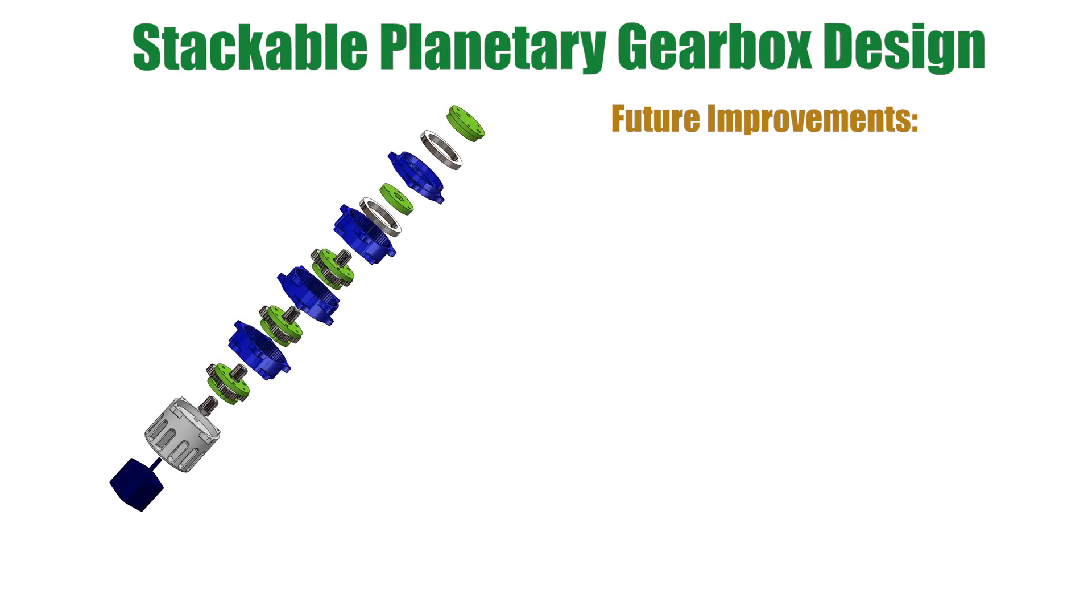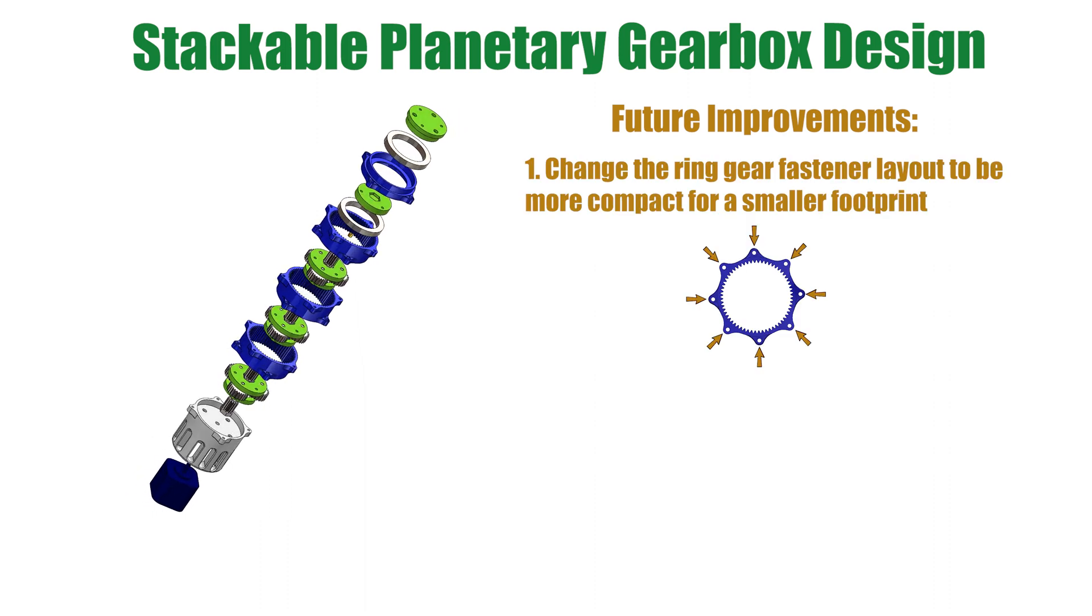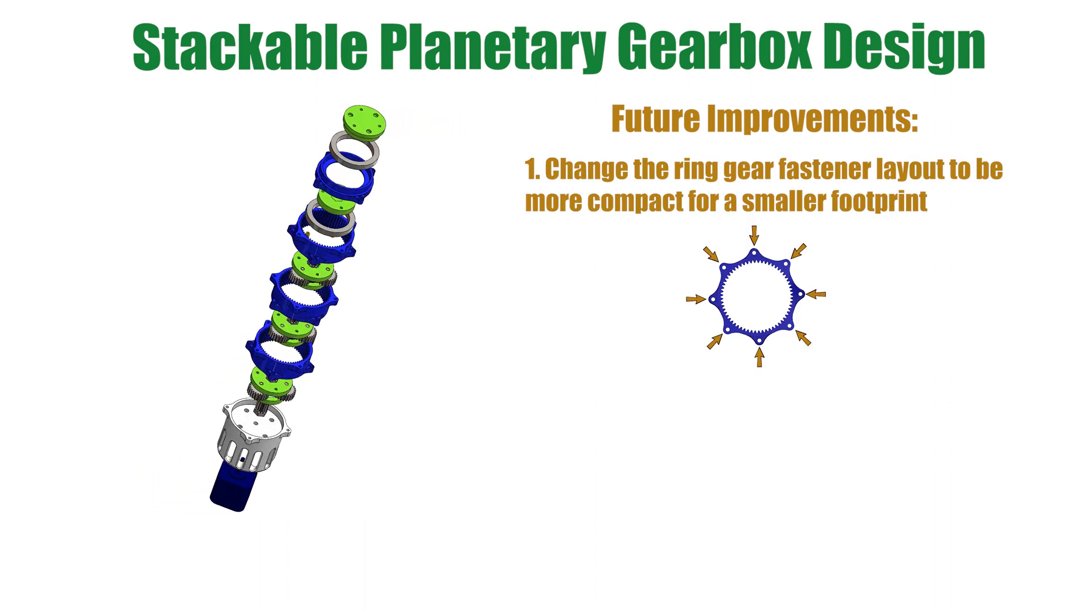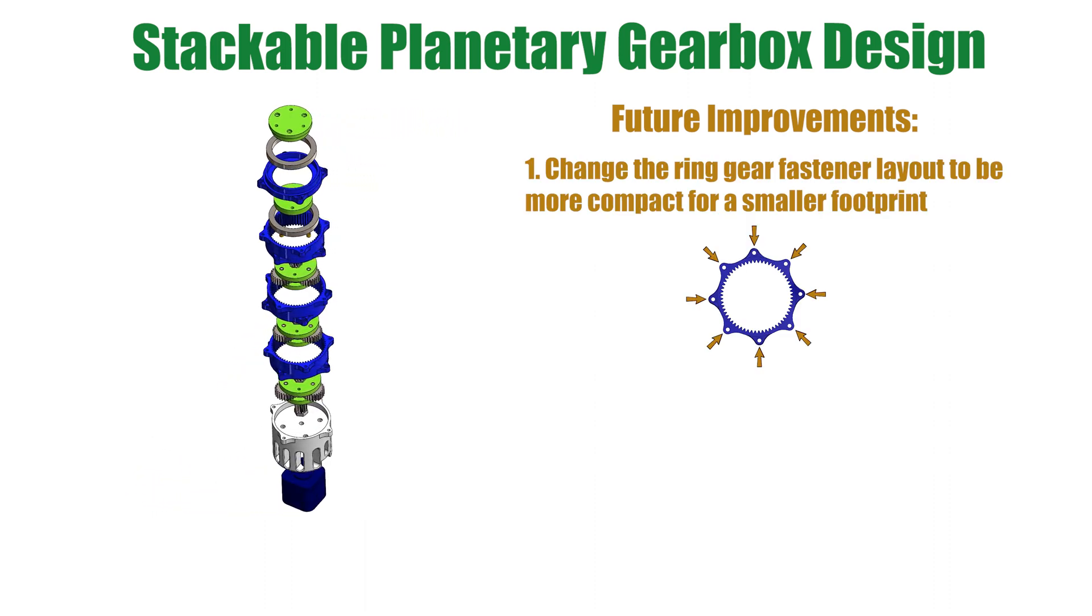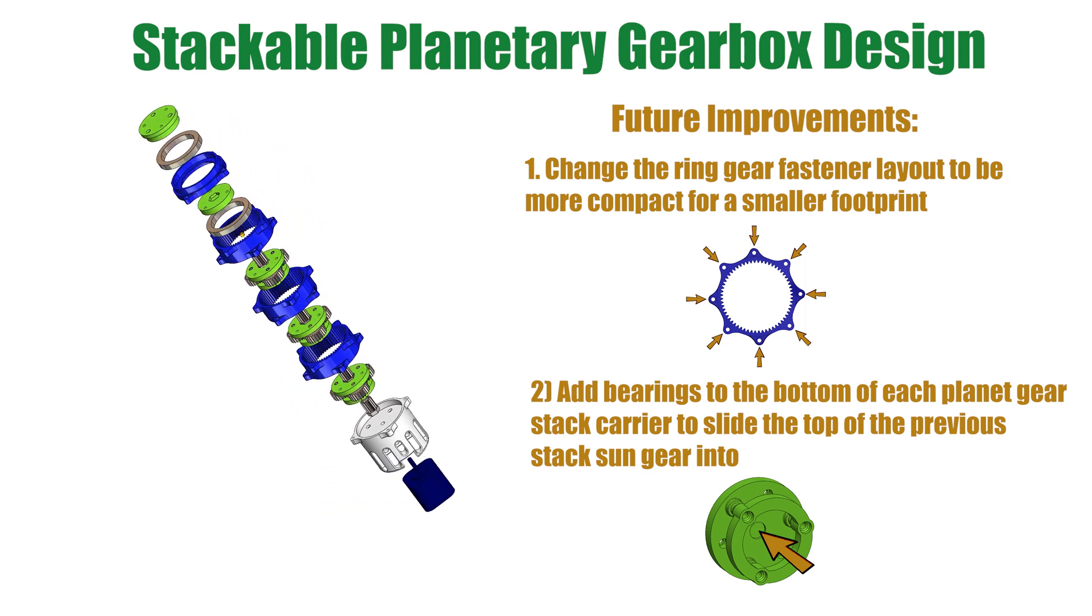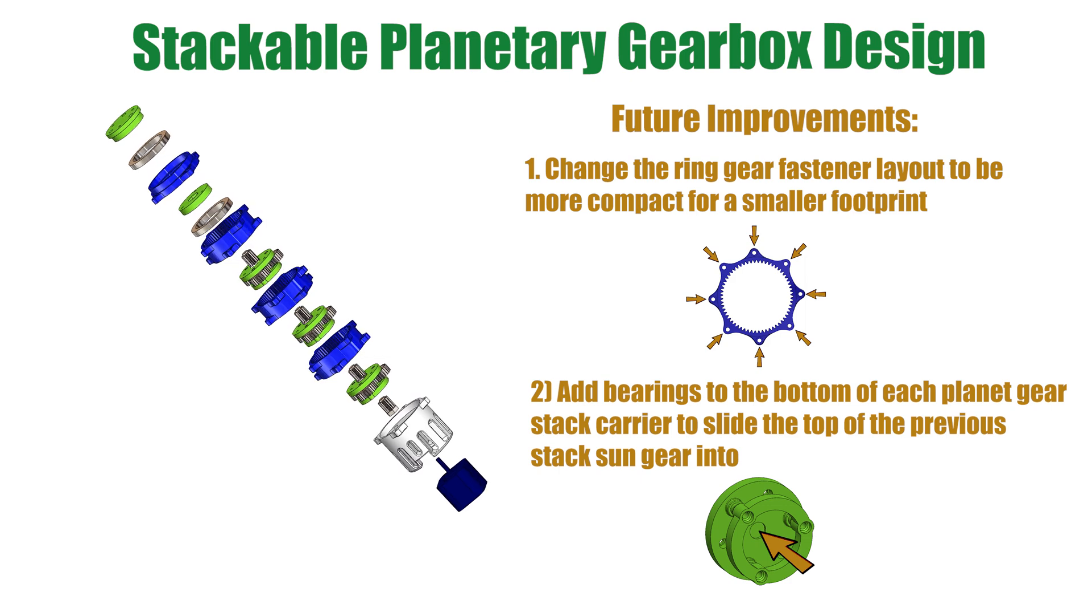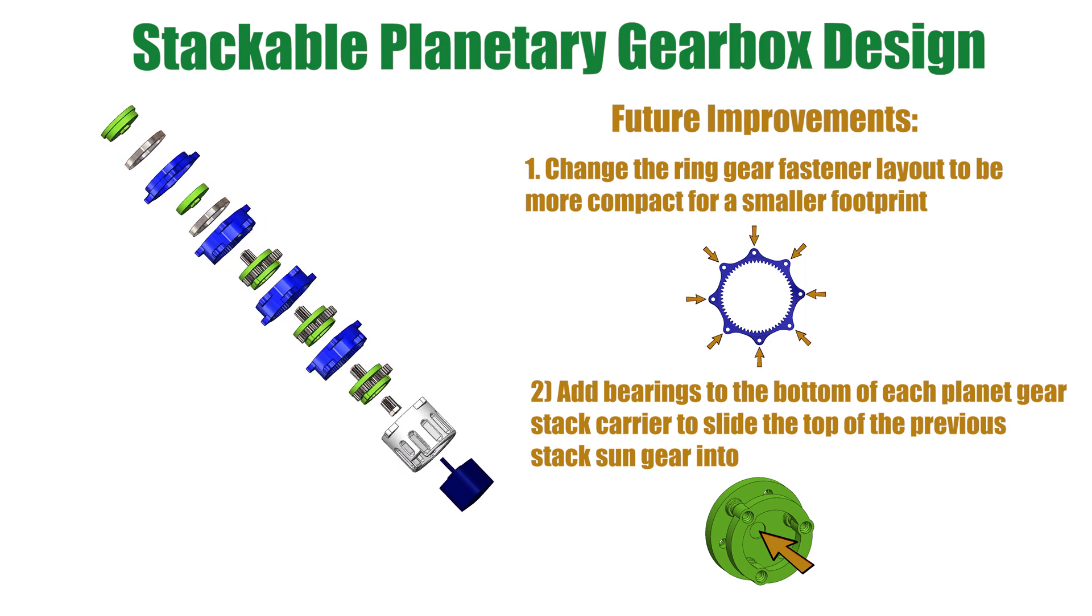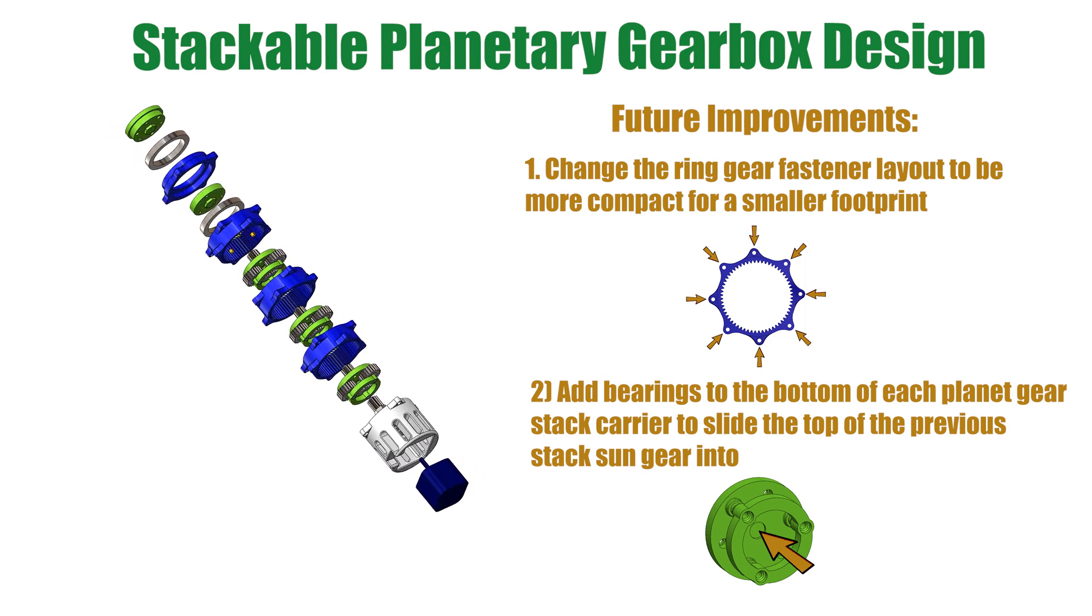Improvements I would currently like to do on this gearbox would be firstly to change the ring gear fastener locations to be more compact for a smaller footprint. Secondly, I would like to add bearings to the bottom of each planet gear stack carrier to slide the top of the previous stack sun gear into. This would reduce friction from stack to stack and make the assembly slightly easier.